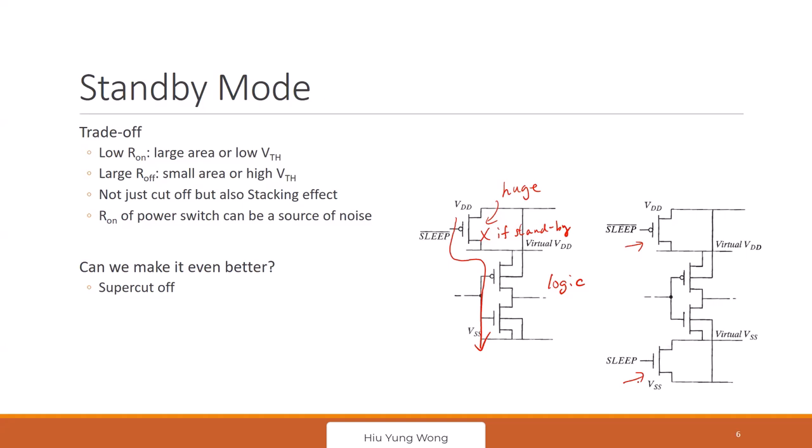And that is, you have the stacking effect. That is one thing. And not just stacking effect, it also has the body effect. Think about the source here is at lower potential than the body. This one gives body effect. It further increases the absolute value of the threshold voltage and thus reduces the leakage.